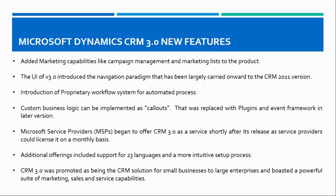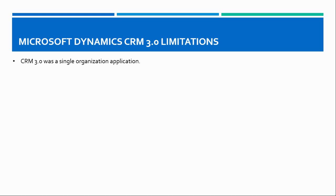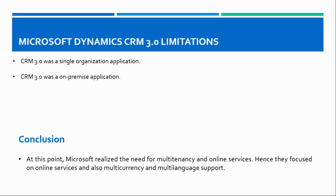CRM 3.0 also had limitations: it was a single-organization application and purely on-premise, meaning you had to install it physically on a server within your company. At this point Microsoft realized the need for multi-tenancy and online services, so they focused on online services and multi-currency and multi-language support for the next version.